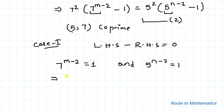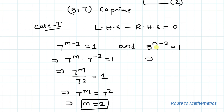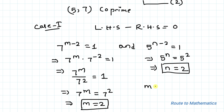So this implies 7m multiplied with 7 to the power minus 2 equals to 1. By applying the exponential rule, 7m divided by 7 squared equals to 1. This implies, by cross multiplication, 7m equals to 7 squared. As the bases are the same, we can write m equals to 2. Similarly, 5 to the power n equals to 5 squared, which gives n equals to 2. So we are getting m equals to n equals to 2 for the first condition.